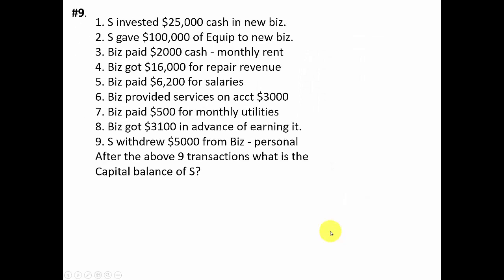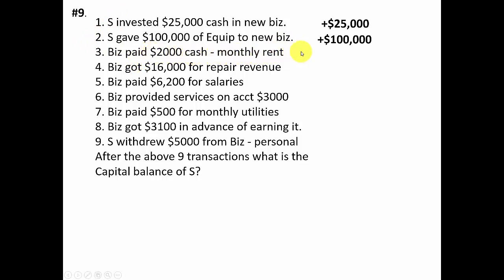Number nine: after nine transactions, what is the capital balance? The owner invested twenty-five thousand dollars cash — increases owners equity by twenty-five thousand. Contributing one hundred thousand dollars of equipment also increases owners equity by one hundred thousand. Paying two thousand dollars monthly rent decreases owners equity by two thousand as an expense. Receiving sixteen thousand dollars for repair revenue increases owners equity by sixteen thousand. Paying sixty-two hundred dollars for salaries decreases owners equity by sixty-two hundred.